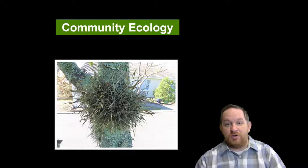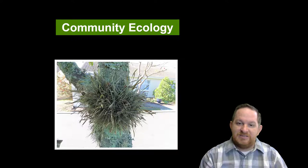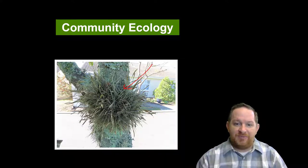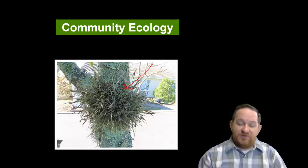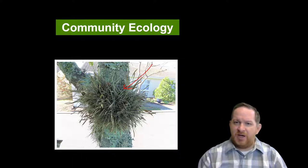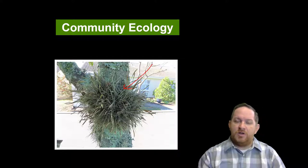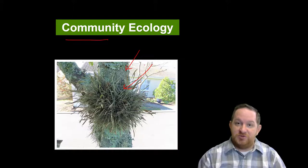Have you ever been walking down the street, or maybe in a forest or park, and noticed some random plant growing out of a tree? It's not the same plant as the tree — these random plants grow out of other plants. If you've seen that, maybe you wondered: is that hurting the plant? Is it a symbiotic relationship? In this video, that's what we're going to talk about — all the different relationships within a community, including the one you see here.